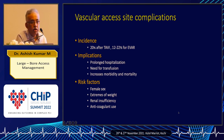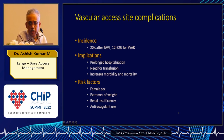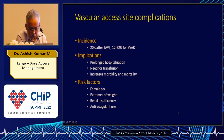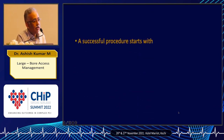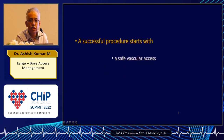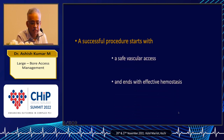People have identified patients who are at risk for vascular access complications: the female sex, extremes of weight — the obese and very thin individuals — and, needless to say, anticoagulant use. If you take a good access, half the job is done.